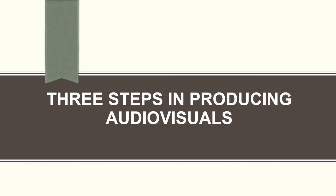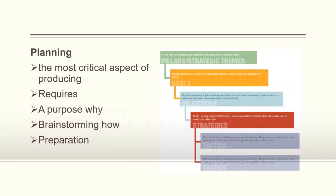There are three steps in producing audiovisuals. First, we have planning — the most critical aspect of producing. It requires identifying the purpose of why, brainstorming of how, and the preparation. Planning everything out is the very first step since you can change everything from lines to recording.